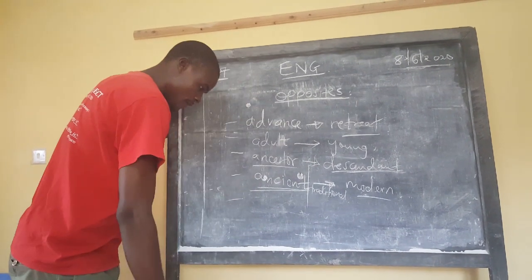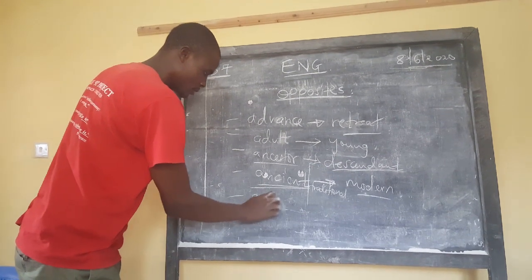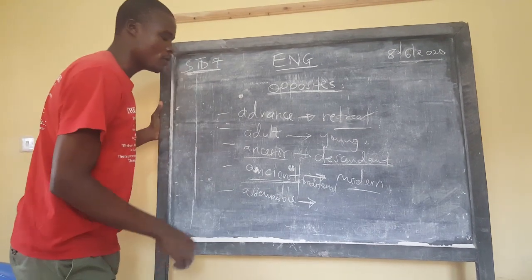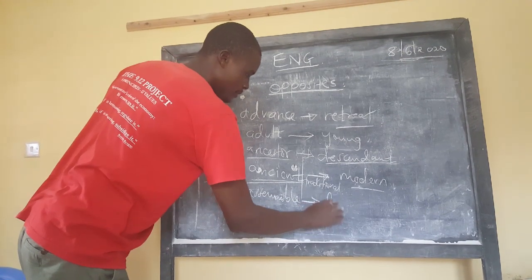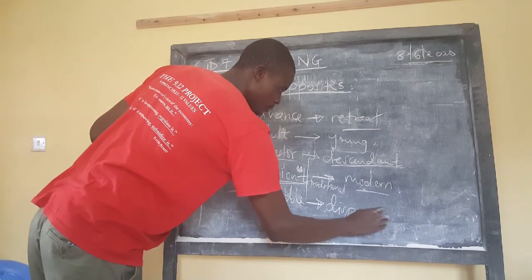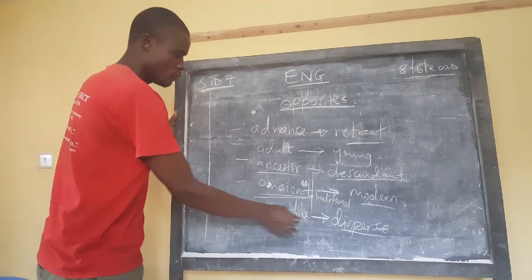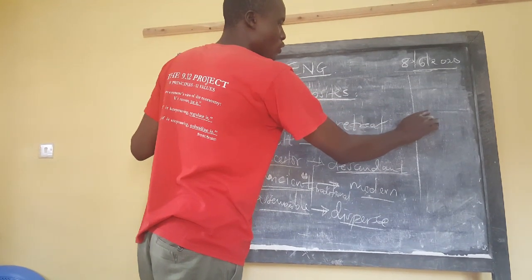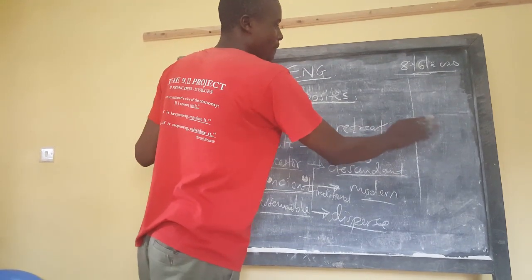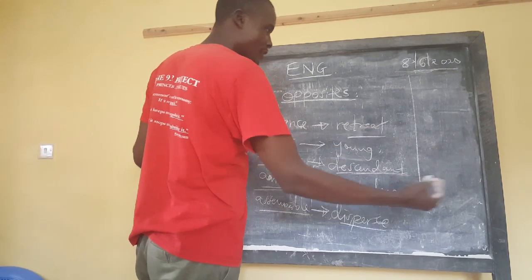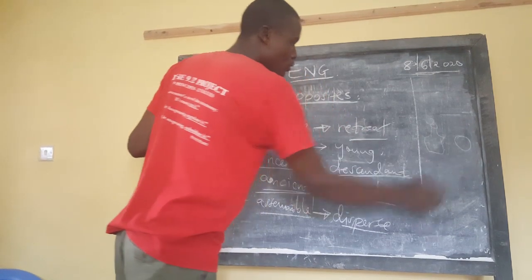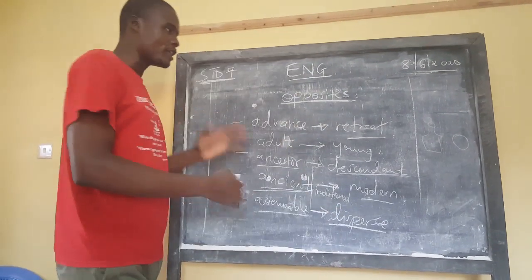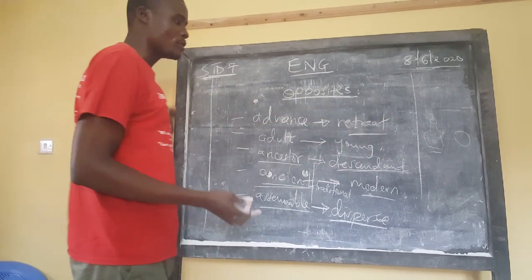Then we have 'assemble' — when you assemble people, you dismiss or disperse them. The opposite of assemble is 'disperse'. For example, when you want to do an experiment, you must assemble the materials you want to use — you collect the bottle, the spoon, and the things you want to use. After finishing the experiment, you disperse them: you take each item back to where it should be.